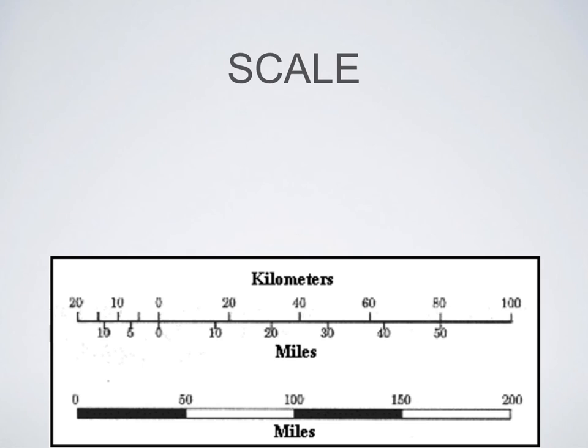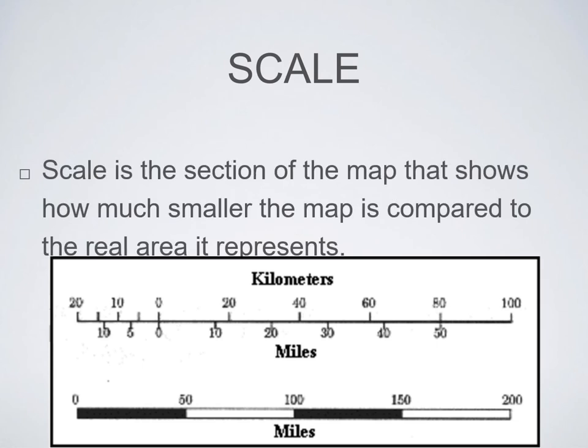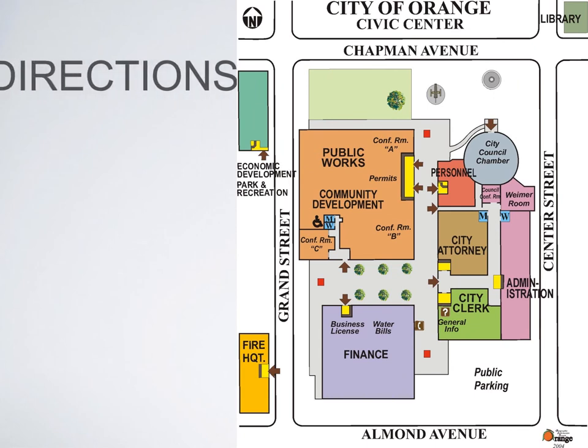Scale will give you an indication of the size of the map that it represents. The scale is a section of the map that shows how much smaller the map is compared to the actual geographical area. If maps are made for Canada, they will be in kilometers. If it's for the United States of America, it will be in miles.